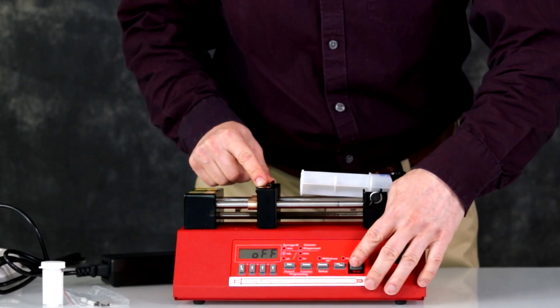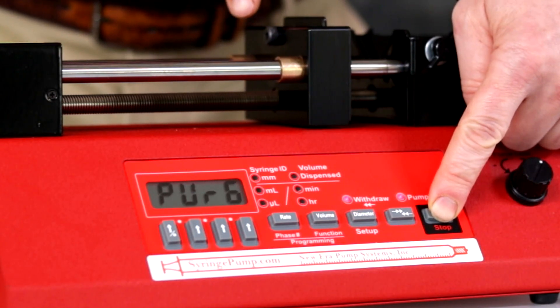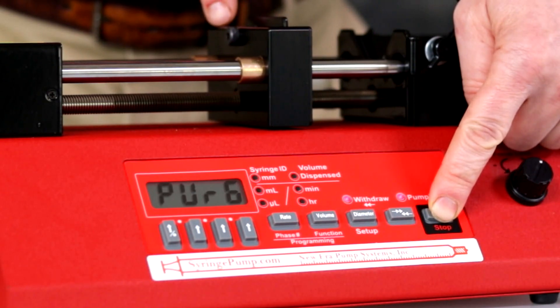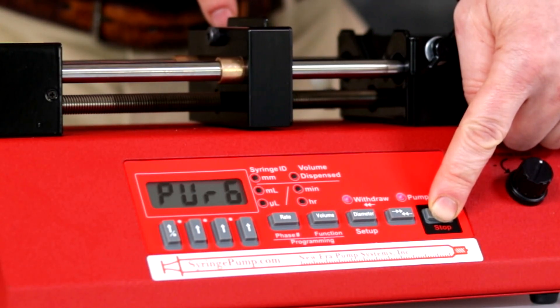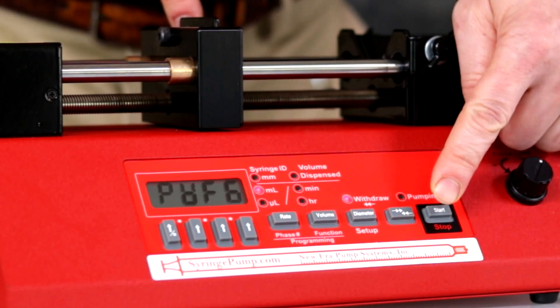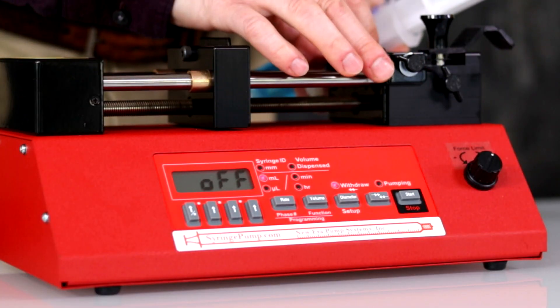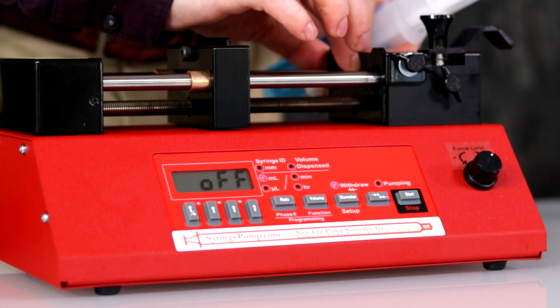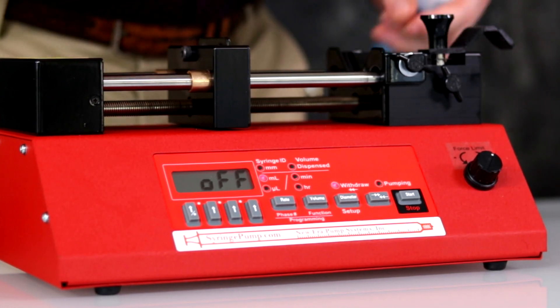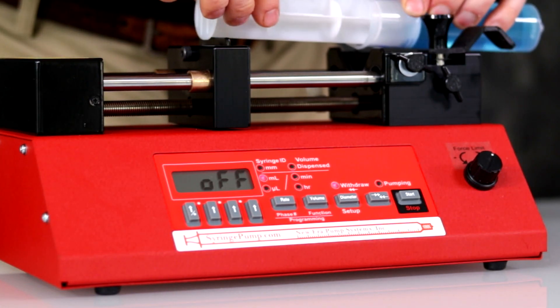Release to stop. Loosen the bracket for the flanges. This is the anti-siphon bracket. Position the flanges between the bracket and the syringe holder. Insert the syringe.